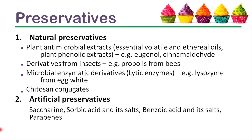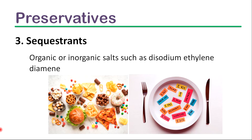When we look at preservatives, we add them to inhibit microbial growth in order to preserve foods. They are mainly natural food preservatives, artificial food preservatives, and sequestrants. Plant antimicrobial extracts, derivatives from insects, microbial enzymatic derivatives, and chitosan conjugates are some examples of natural preservatives. Sorbic acid, benzoic acid, and their salts are some examples of artificial preservatives. In the food industry, sequestrants such as organic or inorganic salts are also used to preserve foods.